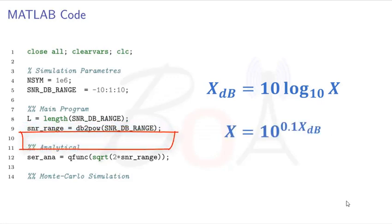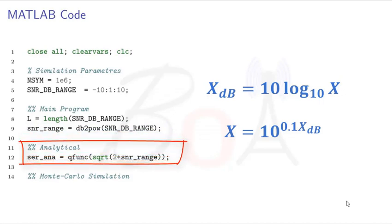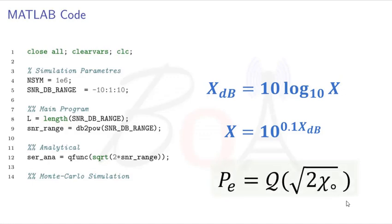We will now compute the analytical, which is also referred to as theoretical values of symbol error rate for the selected SNR range. As discussed earlier in this video, the analytical expression for the symbol error rate for BPSK over AWGN channel is given as a Q function of square root 2 multiplied with SNR. This same expression is implemented in MATLAB here. This command will compute analytical symbol error rate value for each SNR in the SNR range and generate another vector of analytical symbol error rate values. Later in this code, we will plot the analytical symbol error rate to compare it with Monte Carlo simulation.